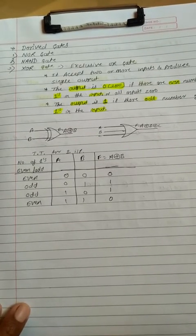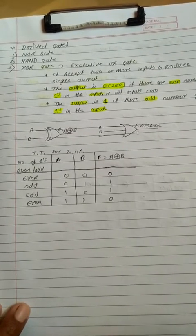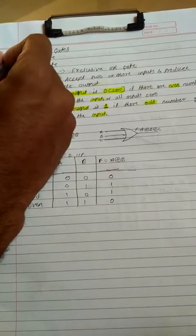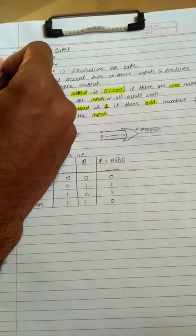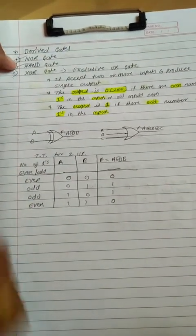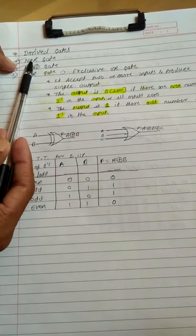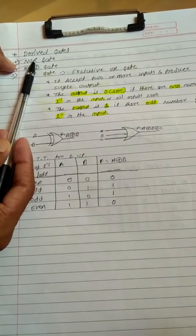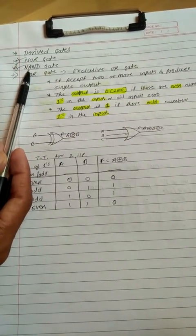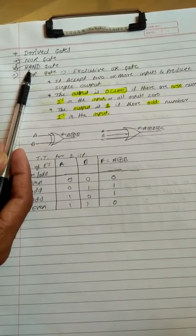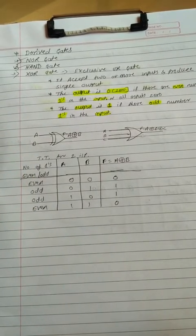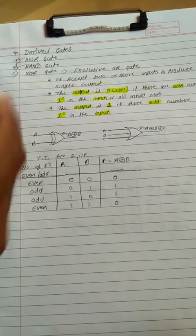Dear students, yesterday we discussed about two derivative gates — that is NOR gate and NAND gate. NOR is nothing but a combination of OR and NOT gate. The second derivative gate, NAND gate, is the combination of AND and NOT gate. Yesterday we discussed it.